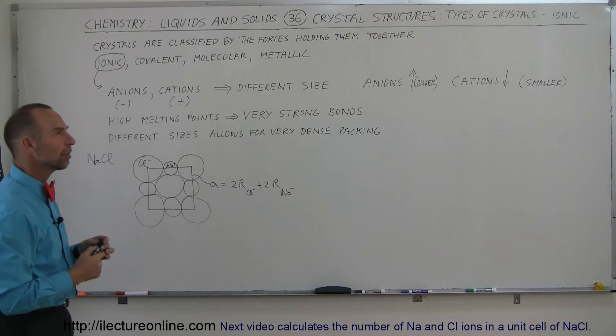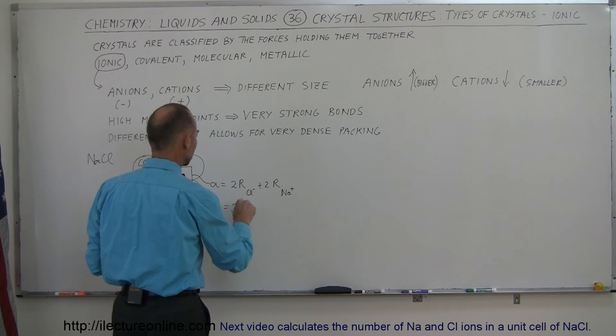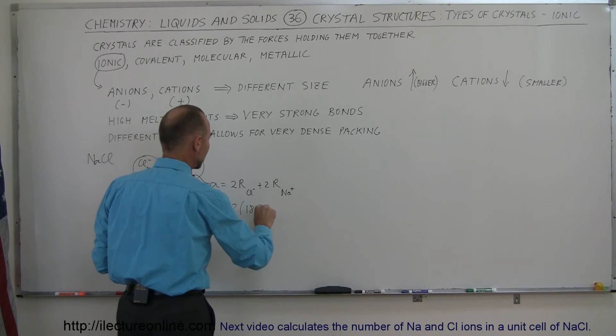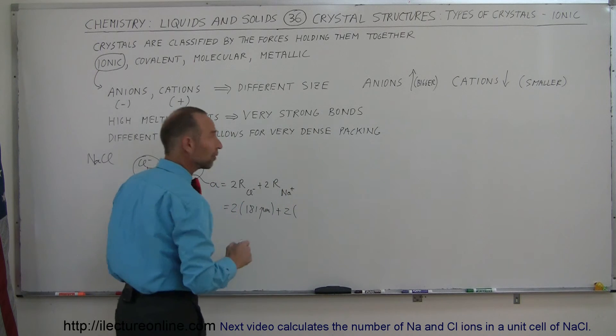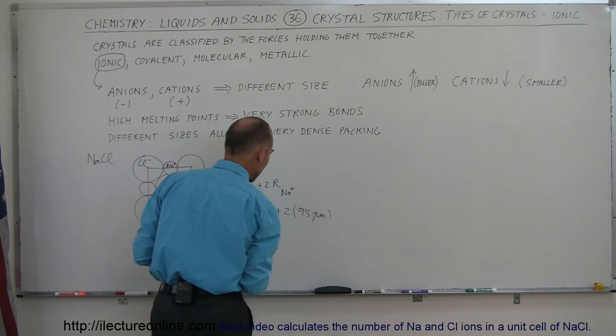The chlorine ions have a radius of 181 picometers, so this would be equal to two times 181 picometers, plus two times the radius of the sodium ion, I believe is 95 picometers.